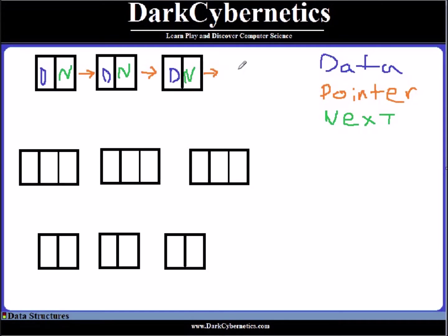For our demonstration, we'll be using just this canvas, where we should have some code for the repository in C++. As we know, for all of these data structures, they usually start off with head pointing to null. Null is memory address zero, and the first part of the data structure is called the head.